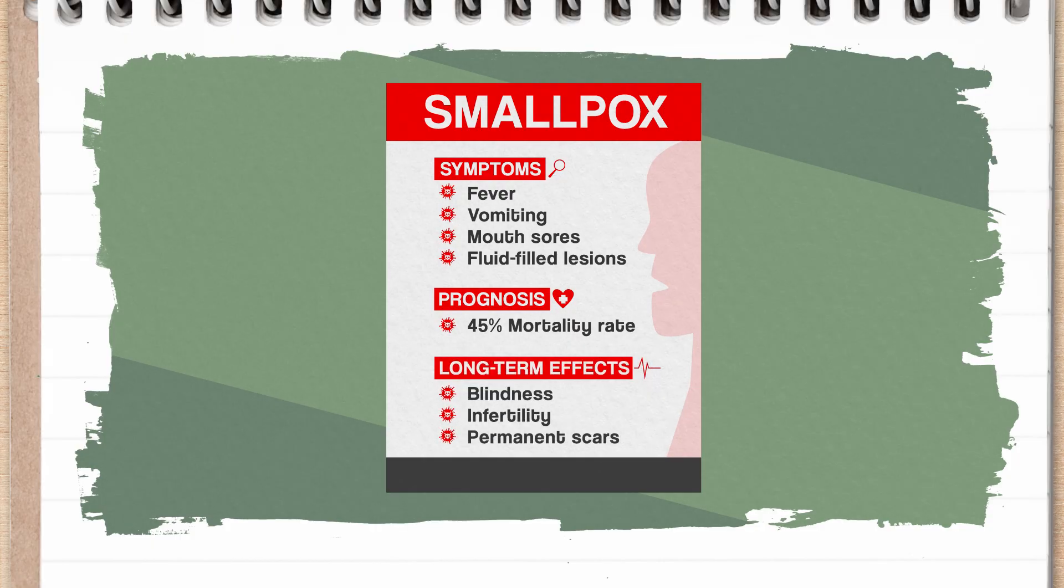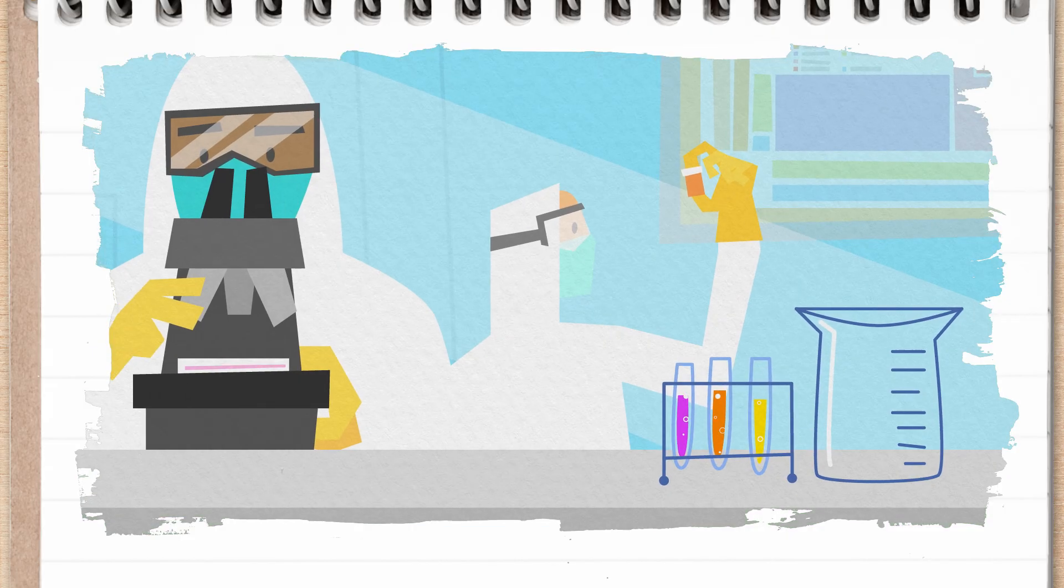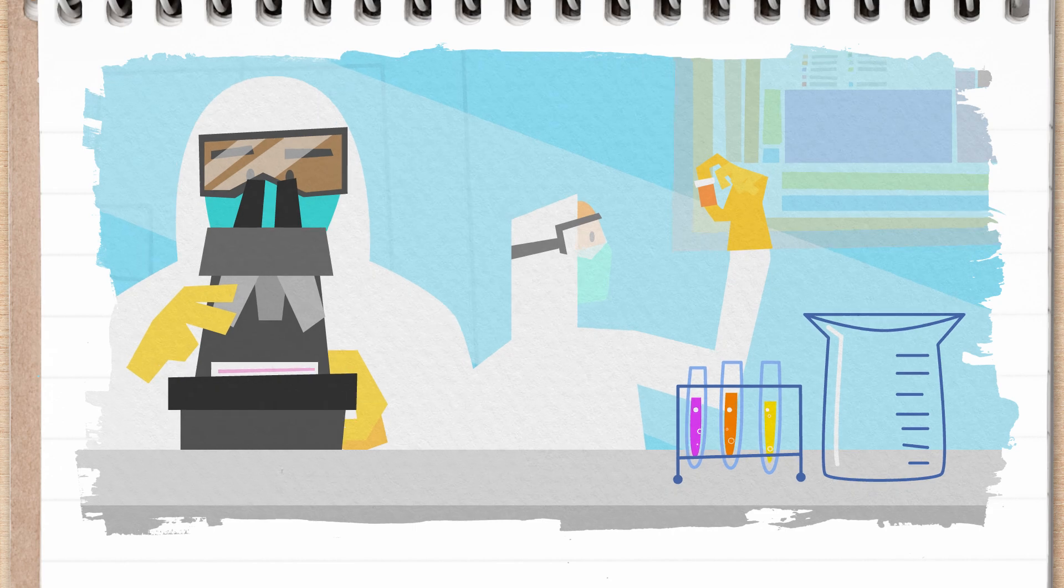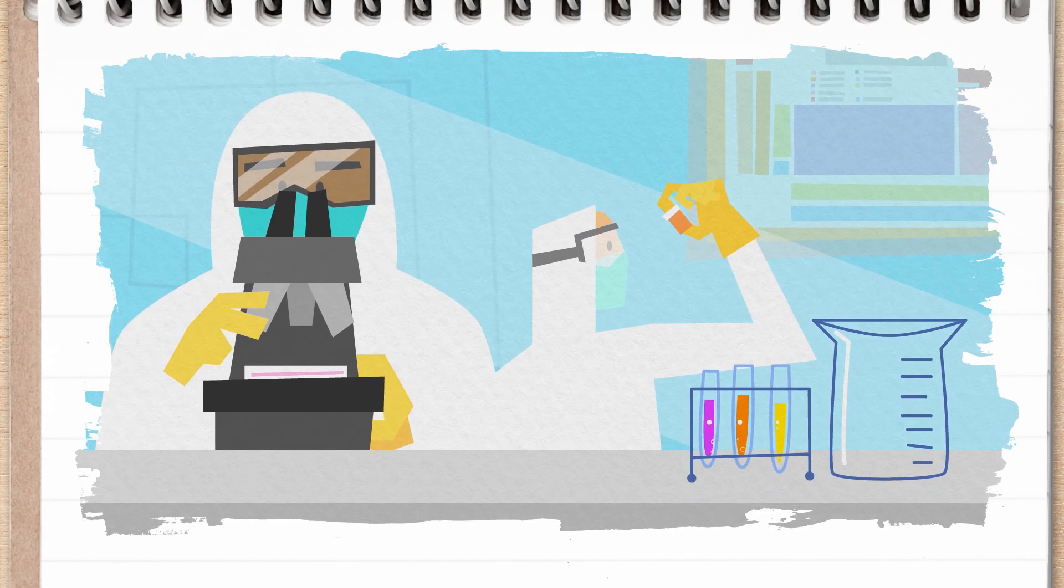But by 1980, smallpox had totally disappeared, thanks to years of research and coordinated effort, also known as public health. Hi, I'm Hank Green, and this is Study Hall Fast Guides, a series where we explore different college majors. Come with me to find out if a life of eradicating deadly diseases, and not-so-deadly diseases, is right for you.